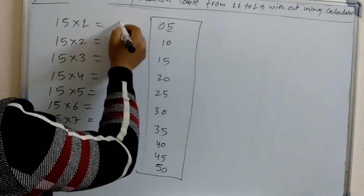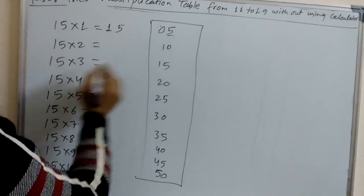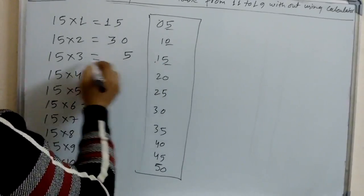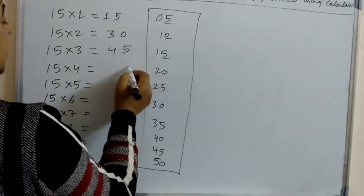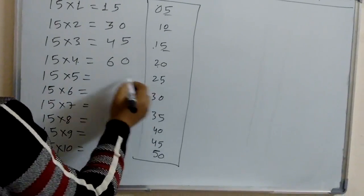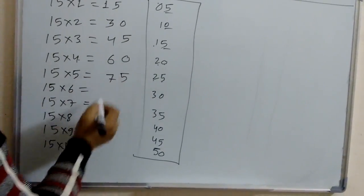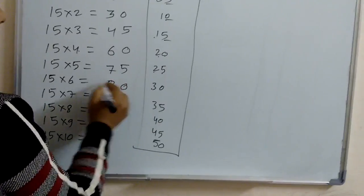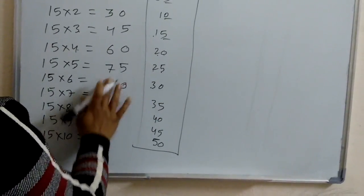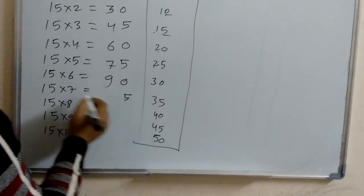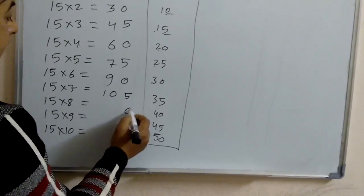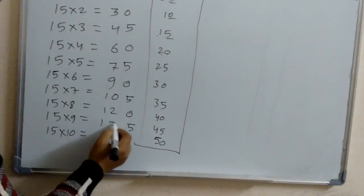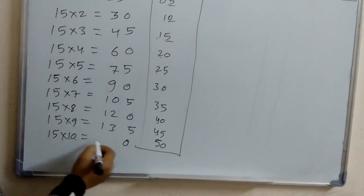Last digit same, write the same one and 0 plus 1 is 1. Last digit same, 1 plus 2 is 3. Last digit same, 1 plus 3 is 4. Last digit same, 2 plus 4 is 6. Last digit same, 2 plus 5 is 7. Last digit same, 3 plus 6 is 9. Last digit same, 3 plus 7 is 10. Last digit same, 4 plus 8 is 12. Last digit same, 4 plus 9 is 13. Last digit same, 5 plus 10 is 15.